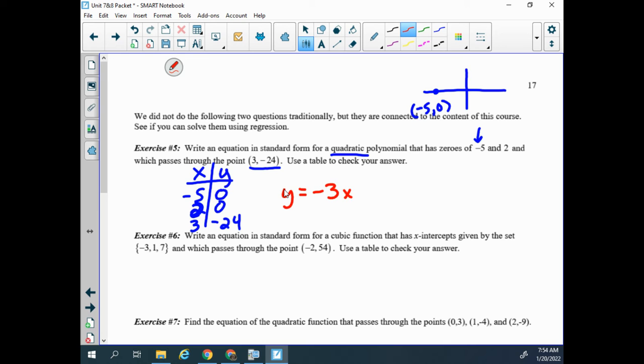So negative 3x squared, negative 9x plus 30. So I'm just plugging that into the template they gave me, ax squared plus bx plus c, with those three parameters.